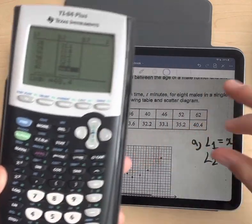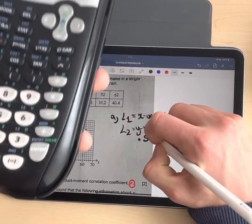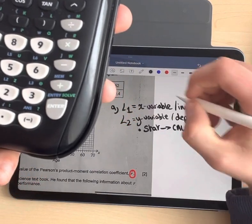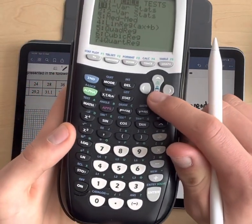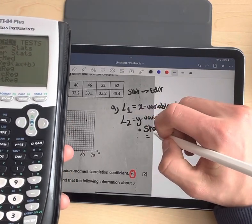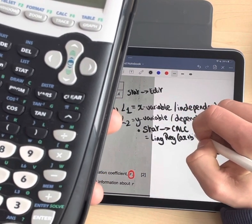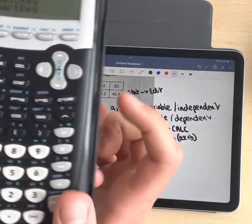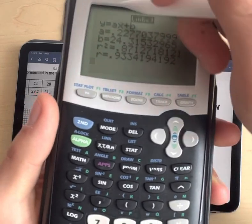Now what we do is go back to stat. Once these are entered, you want to click stat, go to calc, and you want to go to linreg, number four. You go to linreg A X plus B. This is the one you're looking for. You click four. As you can see, we'll get the values. We check that everything's right and we click calculate. We get a variety of numbers.